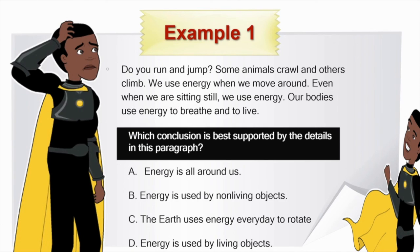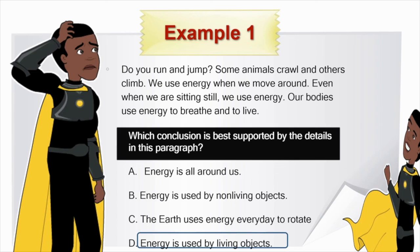We are going to complete two examples together. Example one: Do you run and jump? Some animals crawl and others climb. We use energy when we move around — even when we are sitting still we use energy. Our bodies use energy to breathe and to live. Which conclusion is best supported by the details — A, B, C, or D? The answer is D: energy is used by living things.